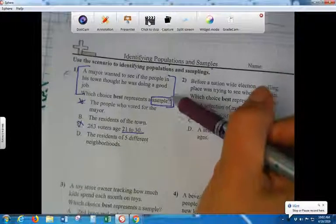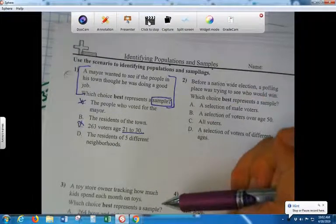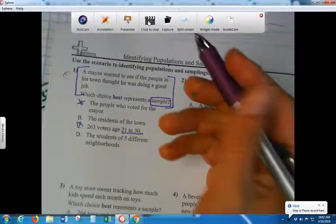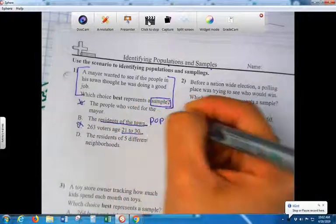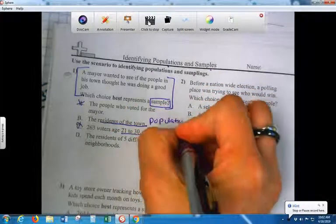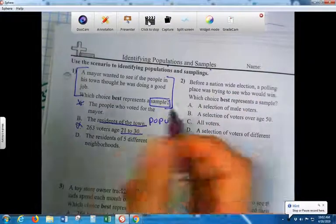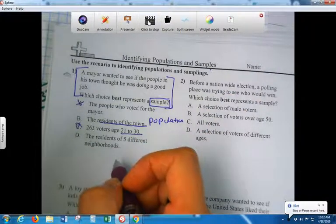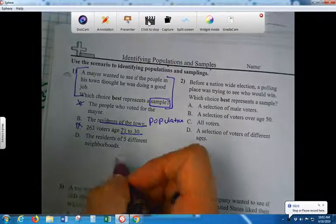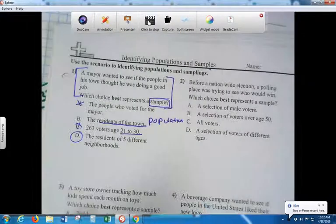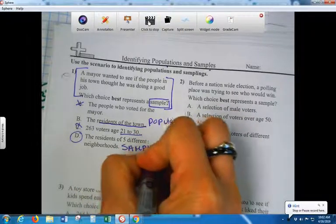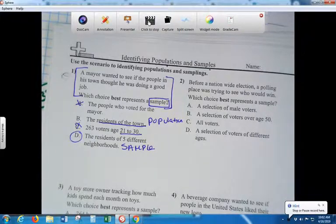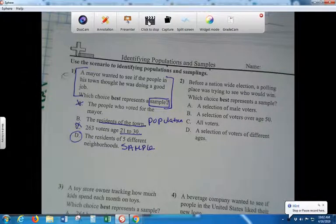Now B is a population. The residents of his town would be a population. The residents of five different neighborhoods, well technically we don't know how many neighborhoods. It could be ten, so D is a sample. Okay, and it's a random sample. It's not like only girls, only boys, only ages here and there. Okay, number two.